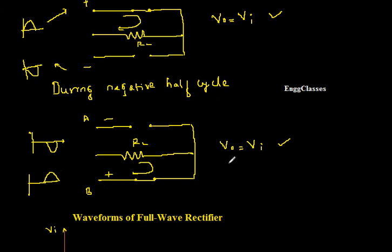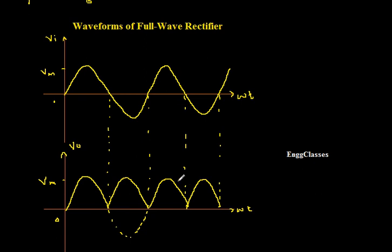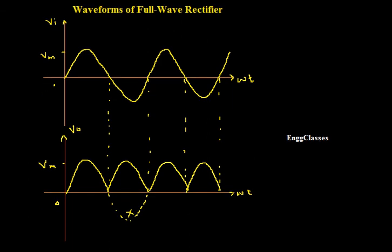So this is the input, and since point B is not equal to vi, we get the output with positive half cycles only — combining everything gives us positive half cycles throughout. This is the waveform of the full wave rectifier. In the videos to come, we will consider different parameters of the full wave rectifier. Thank you everyone for watching.